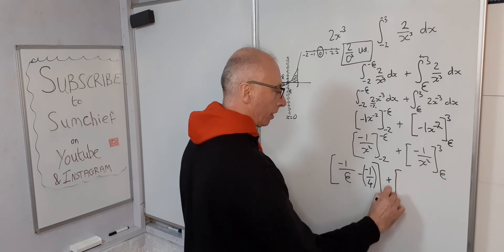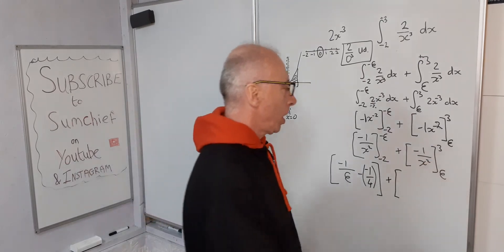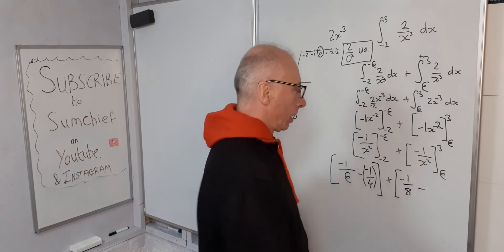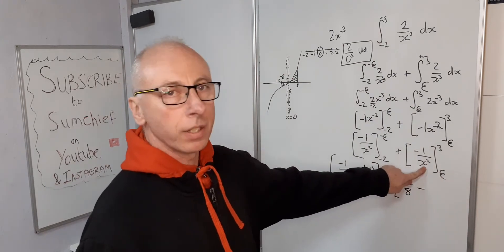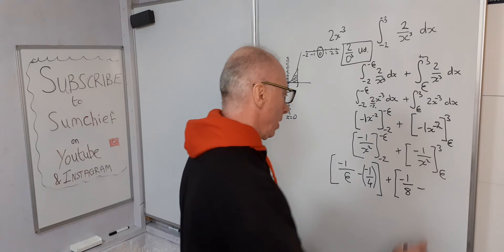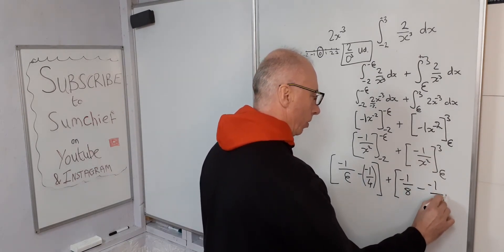And then we're going to add 1 over x squared where x is 3. So that gives us minus 1 over 8. And then subtract: epsilon into this gives us epsilon squared and a negative, so that's minus 1 over epsilon squared.